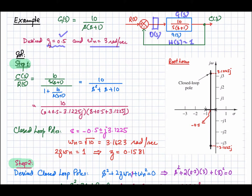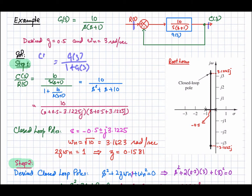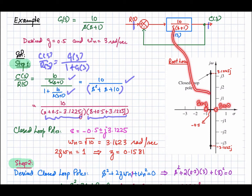The first step is to find the closed-loop poles of the uncompensated system. The closed-loop transfer function is G(s) / [1 + G(s)], since H(s) = 1. Factorizing, we find one pole at the origin s = 0 and the other at s = −1. The root locus shows that as gain K increases, the poles move along the root locus, resulting in closed-loop poles at −0.5 ± 3.1225j for a certain K.